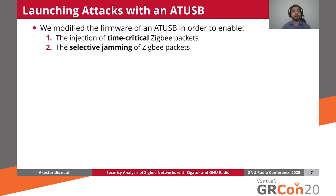So far, we discussed scenarios where we opted to use a software-defined radio. However, there are still cases where it's much easier to achieve the desired outcome with a dedicated IEEE 802.15.4 transceiver. One such case is the injection of a time-critical Zigbee packet, such as the injection of a MAC acknowledgement, and we can easily achieve that by modifying the firmware of an IEEE 802.15.4 USB adapter — in our case, an AT-USB. Similarly, another functionality we need is the ability to selectively jam Zigbee packets, and again we achieved that by modifying the firmware of an AT-USB.